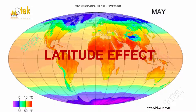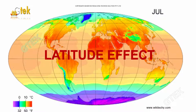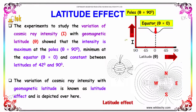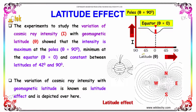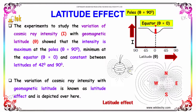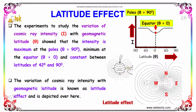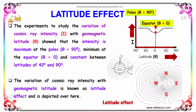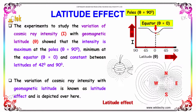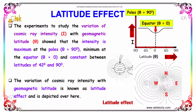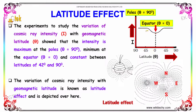Let's move on to the new area of latitude effect. The experiment to study the variation of cosmic ray intensity I with the geomagnetic latitude theta showed that the intensity is maximum at the poles, theta equal to 90 degrees, and minimum at the equator, theta equal to zero, and is constant between 42 degrees and 90 degrees. The variation of cosmic ray intensity with the geomagnetic latitude is known as the latitude effect.